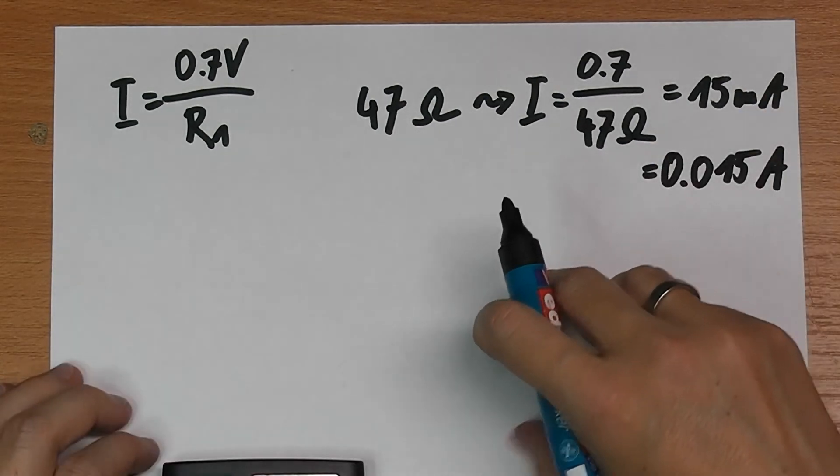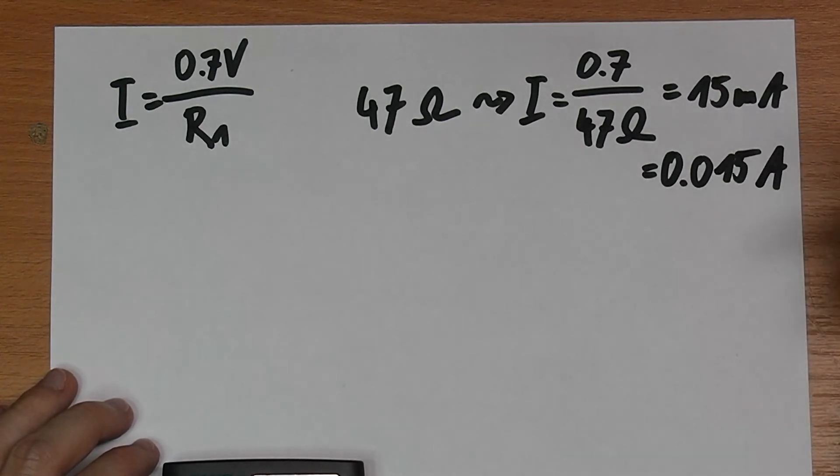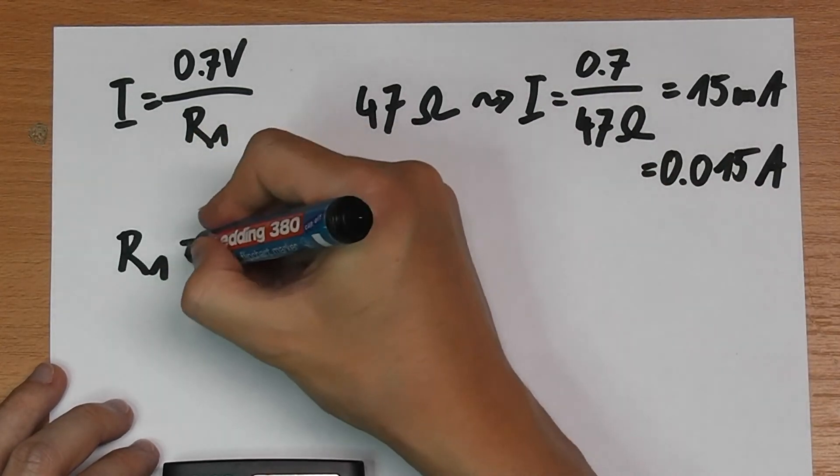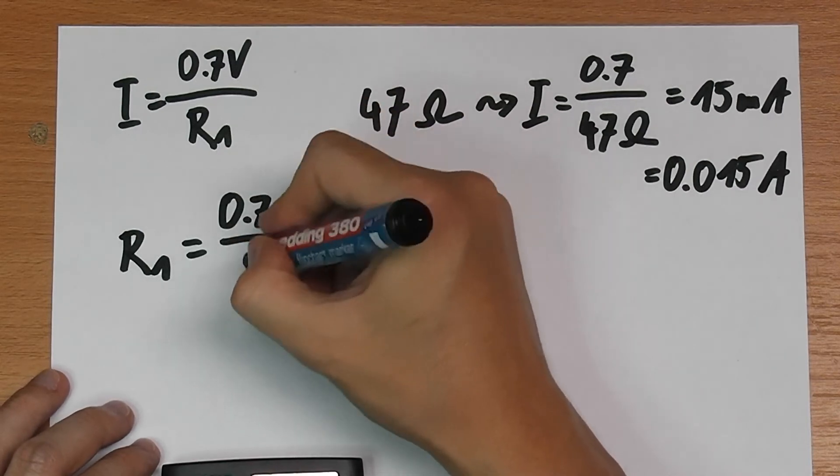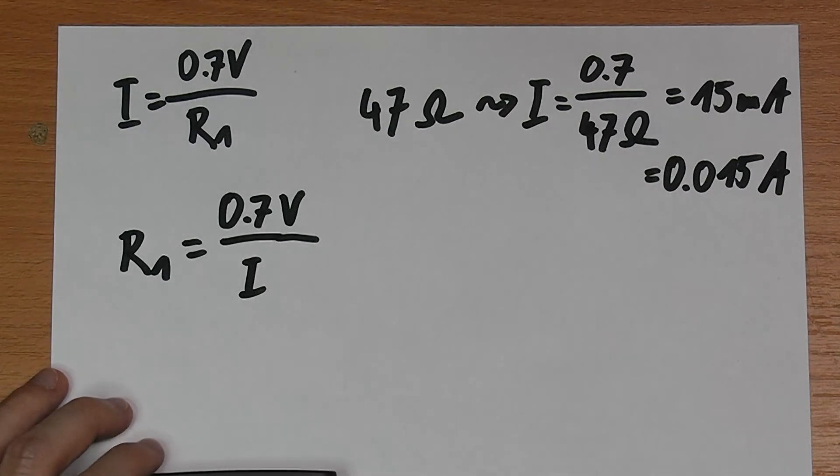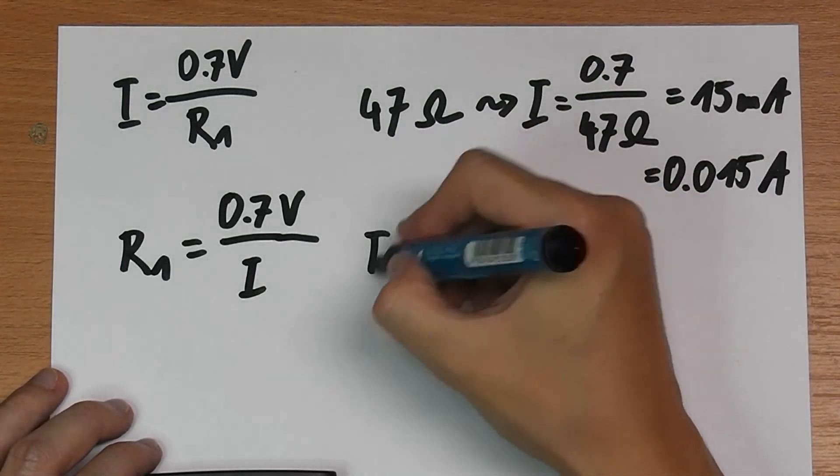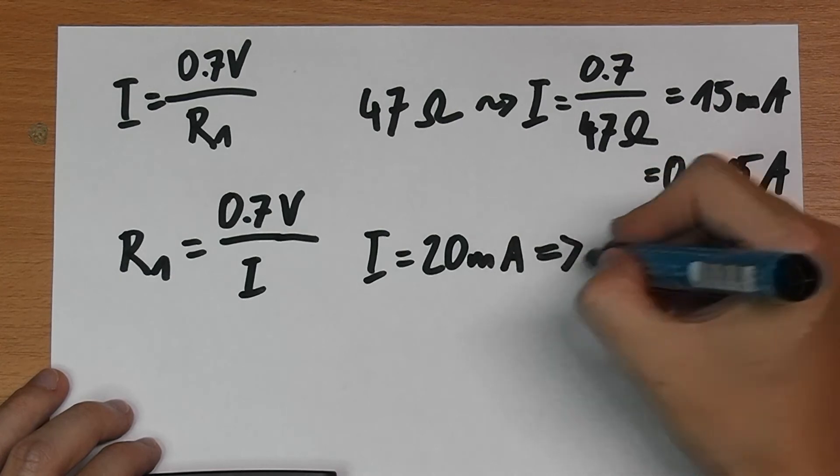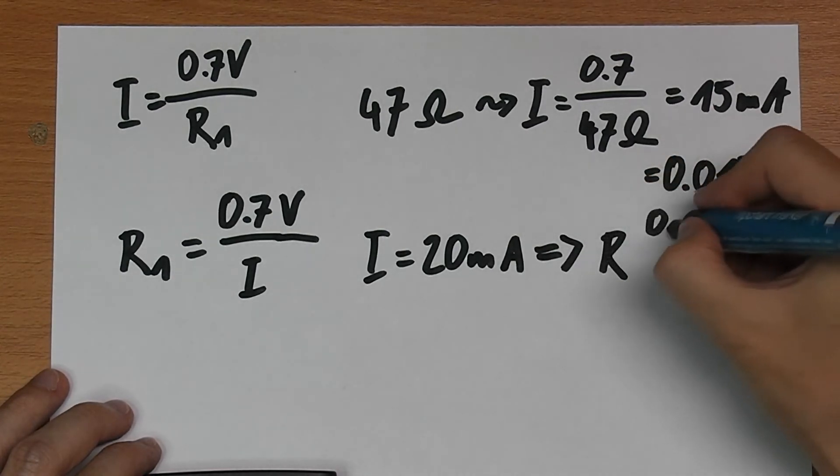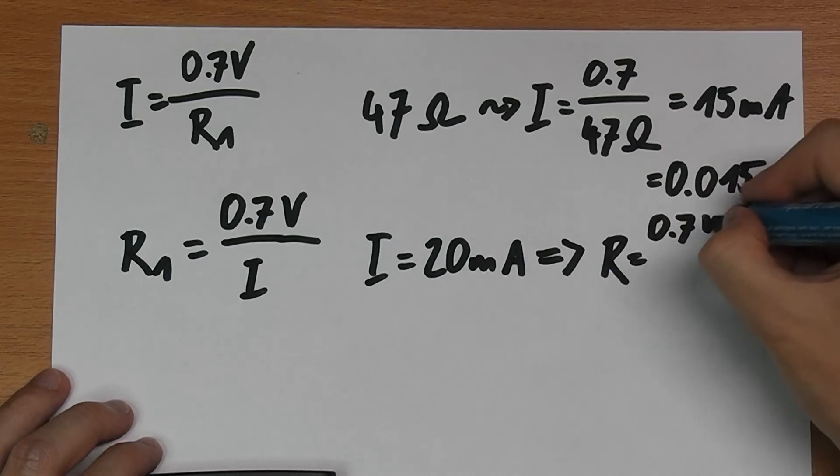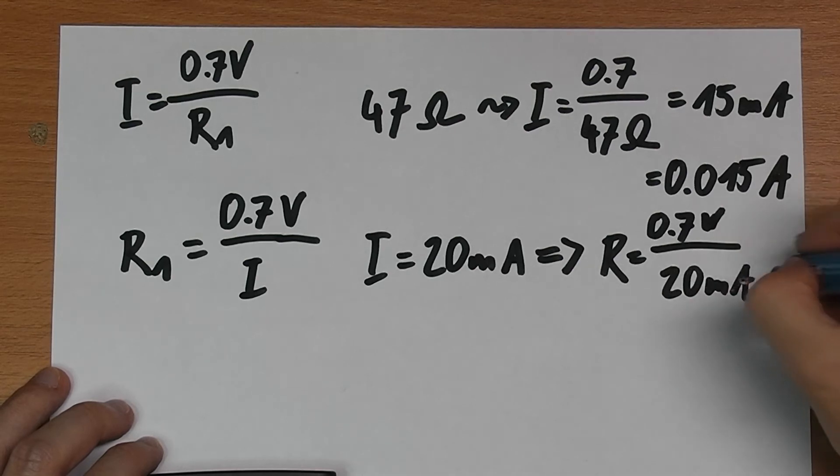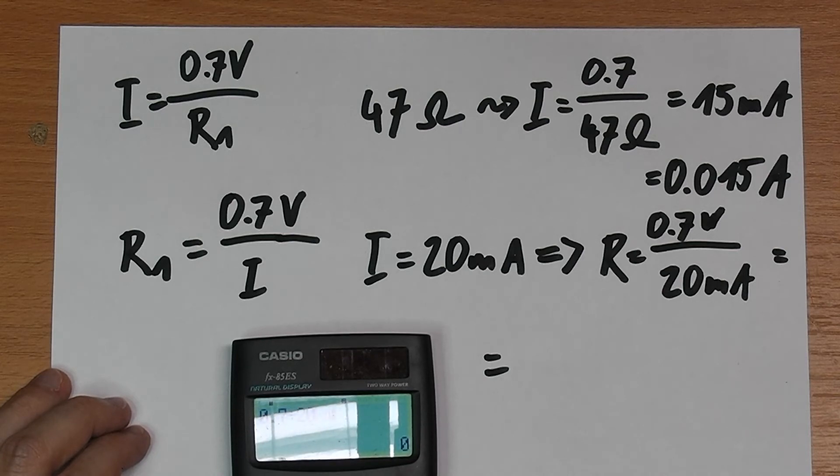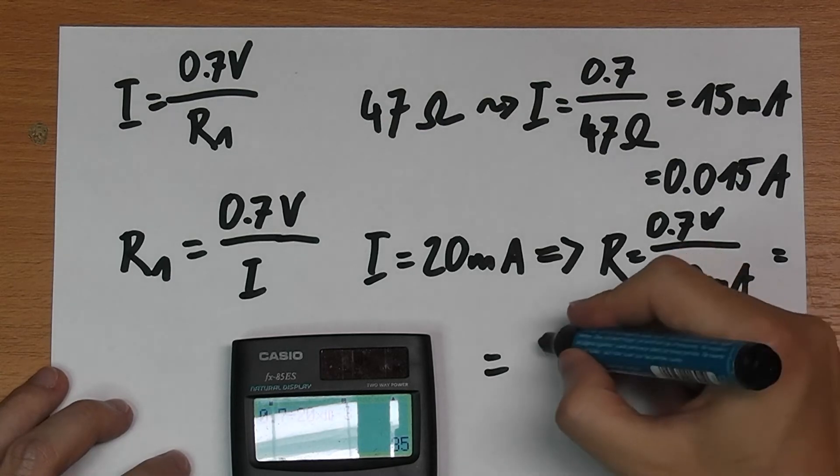Obviously you want to solve this equation for R if you have a constant current source because you give the current and you want to know what resistor you need to put in for this. You can basically just solve for R and it's also very easy. It's 0.7 volts over I. Given a current I, let's say I would like to have 20 milliamps. This will give me an R of 0.7 volts over 20 milliamps. Again, putting the values in the calculator, 0.7 divided by 20 milliamps equals 35 ohms.